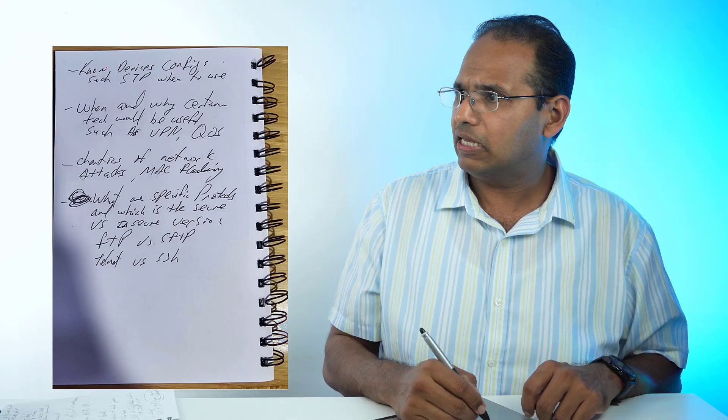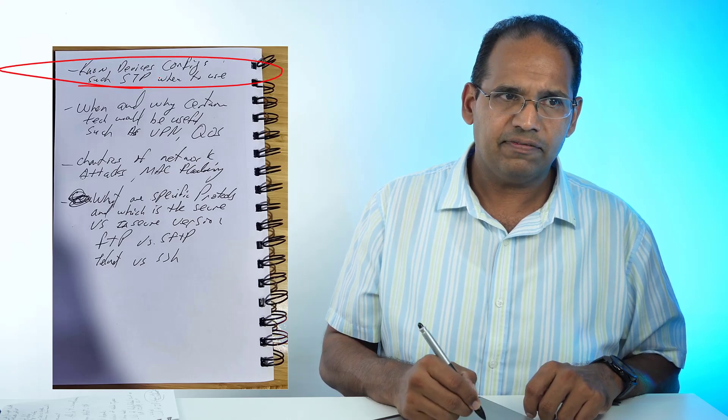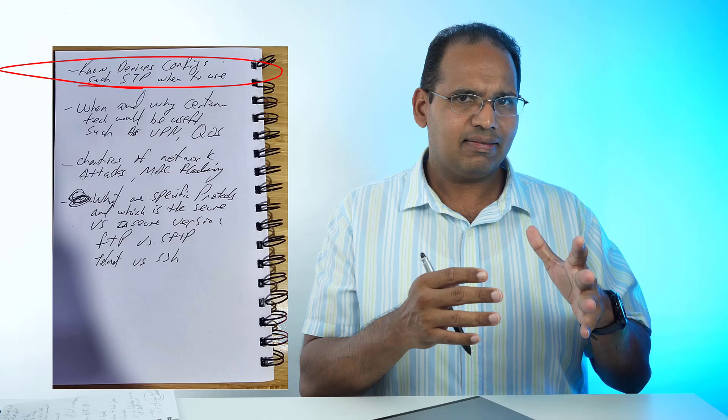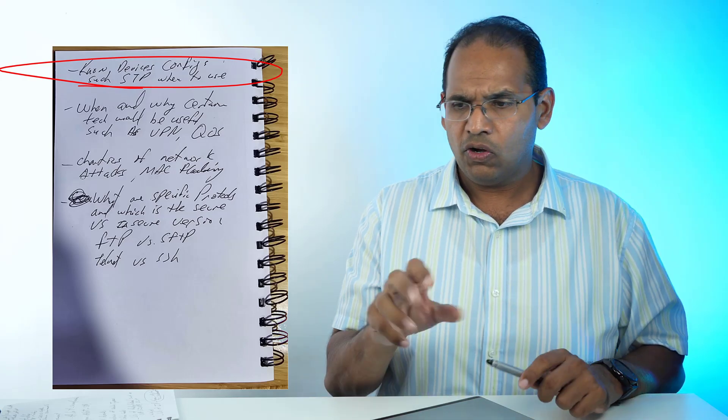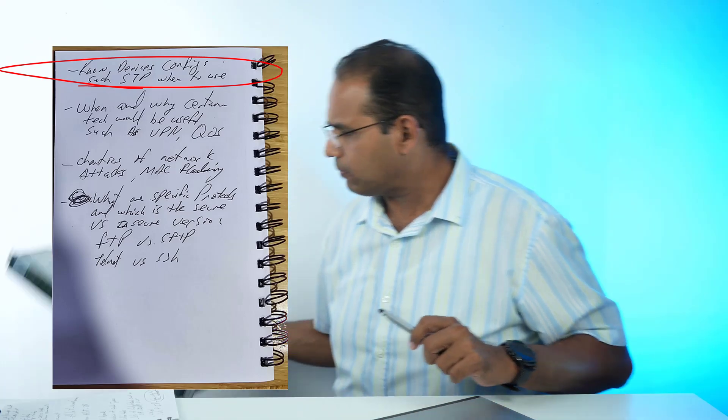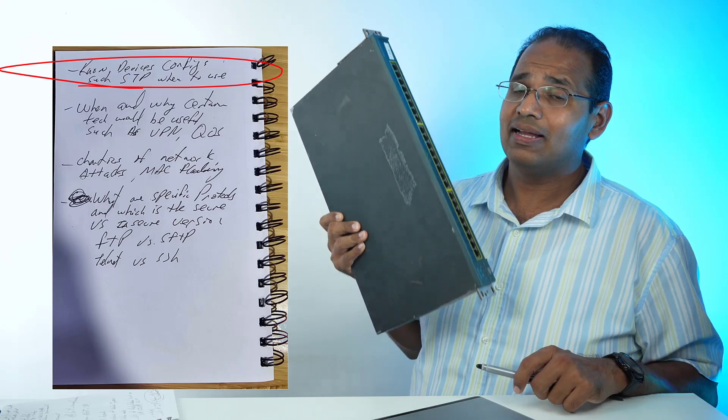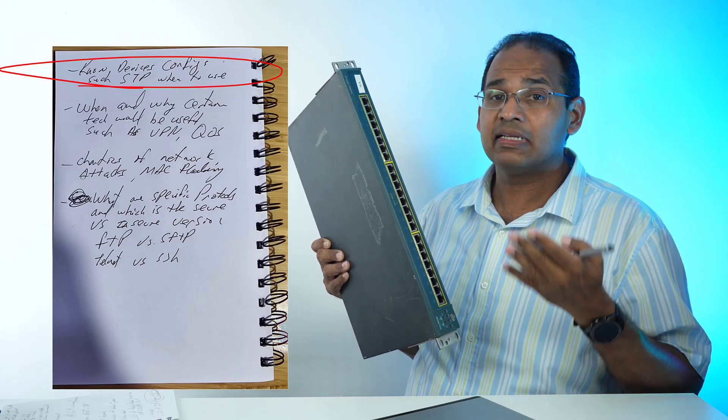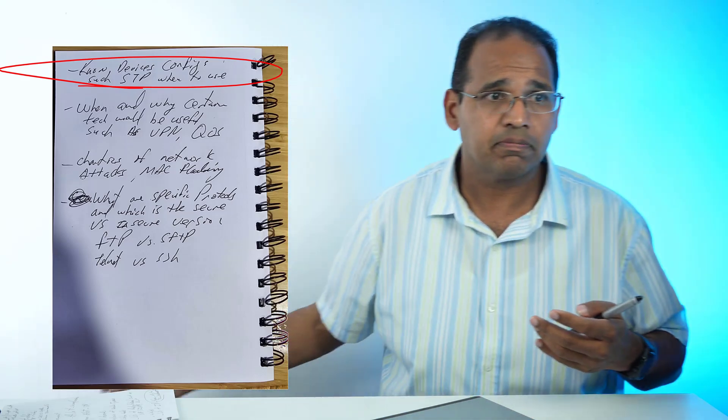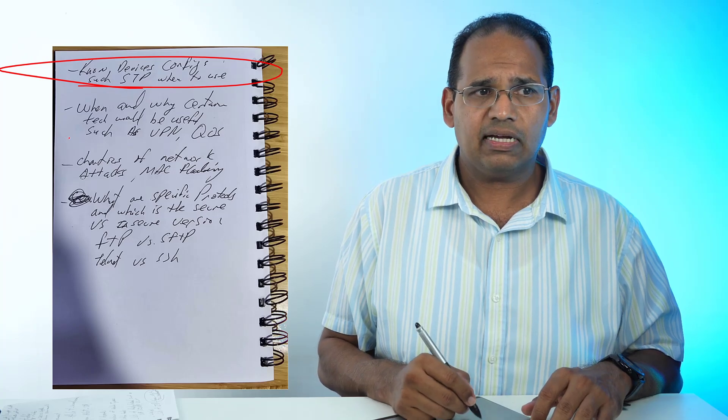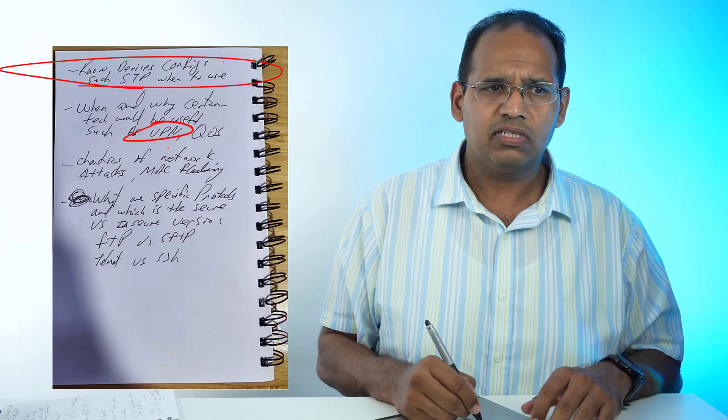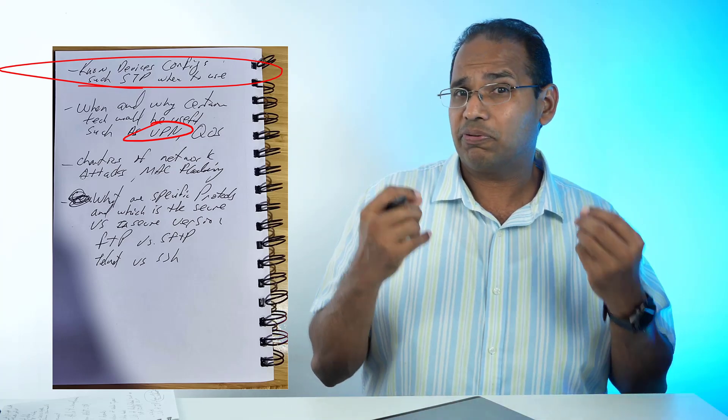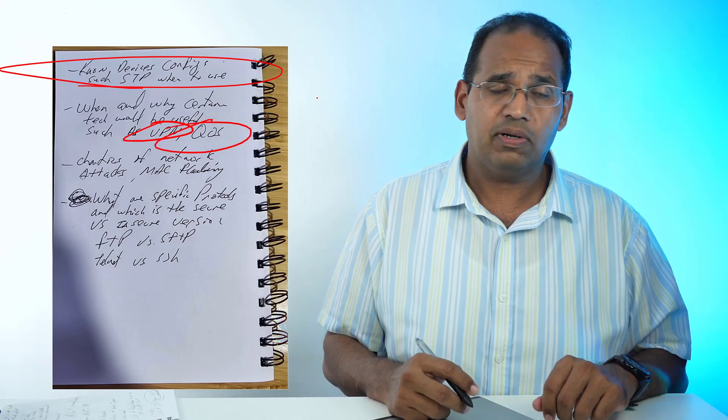Make sure you know device configs, such as FTP. What can you configure on a switch? You don't have to actually configure the switch, but you have to know what type of configs you can apply. If I plug in multiple switches and have redundant ports, I've got to enable STP. If I want one of these ports to get data from every one of the ports, I have to enable port spanning or port mirroring. When and why certain tech would be useful—for example, in what scenario would a company want to implement a VPN? Maybe because they have users working from home and they want end-to-end encryption. When would they implement QoS? Maybe they want to prioritize certain traffic.